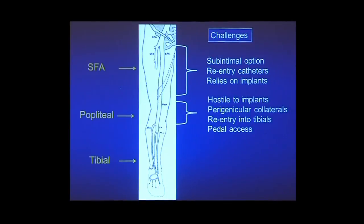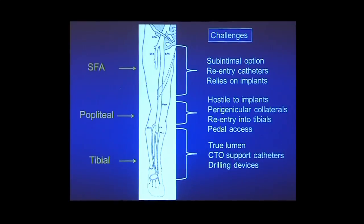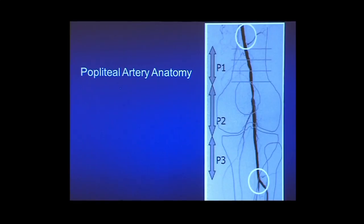In the popliteal, there's a sense that there's more hostility to implants because of the flexibility around the knee joint. We have the worry of protecting those perigenicular collaterals. When you have a popliteal that's occluded in its entirety with reconstitution into the tibials, that's a setup for a failed endovascular intervention in my experience — it doesn't mean they'll all fail, but it's a very challenging situation. With tibials, we have a much higher incentive to stay true lumen, and we can do that now with CTO support catheters and drilling devices. The tibials are longer, straighter conduit arteries, quite different from the popliteal.